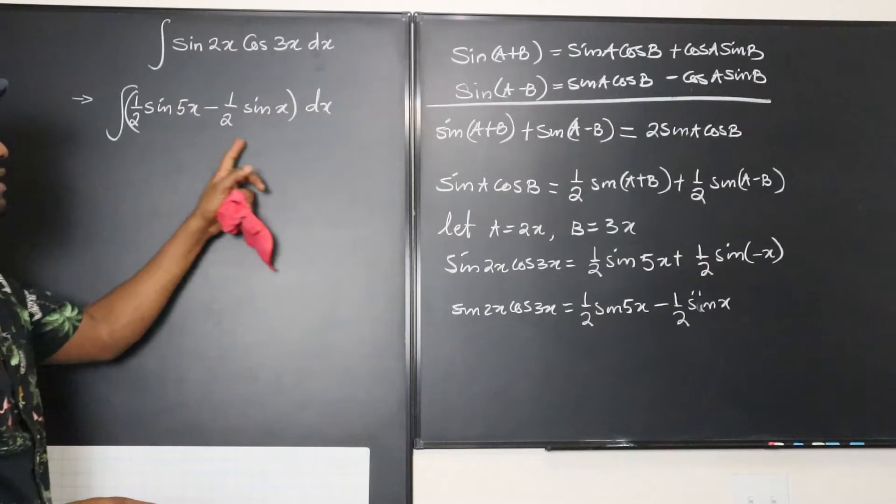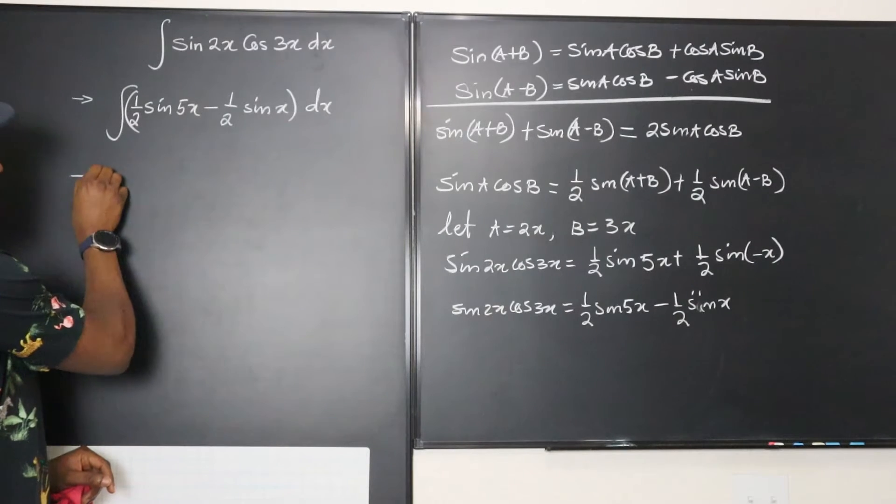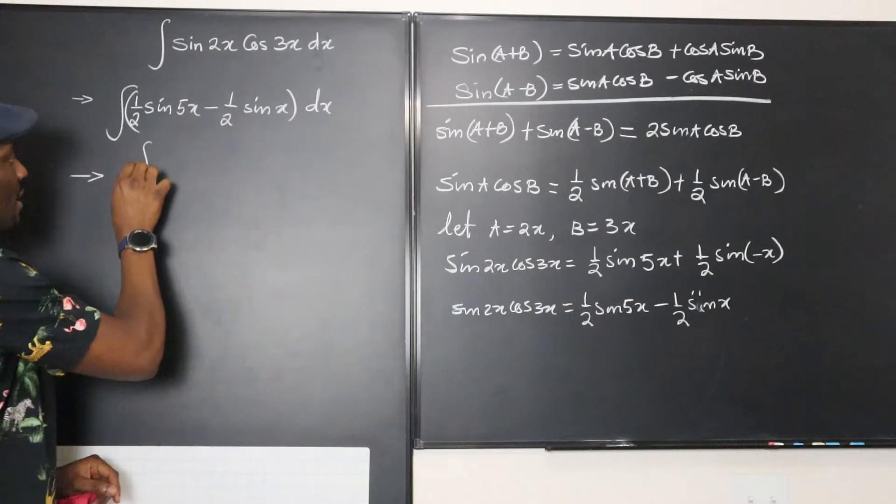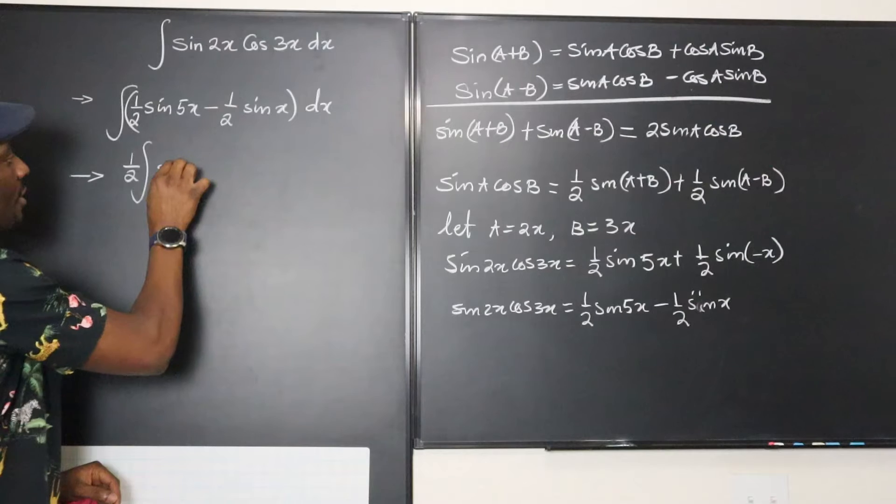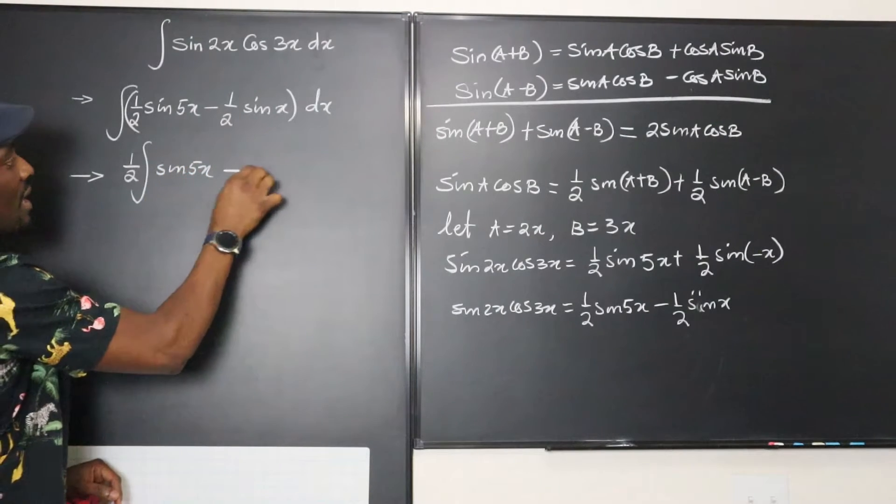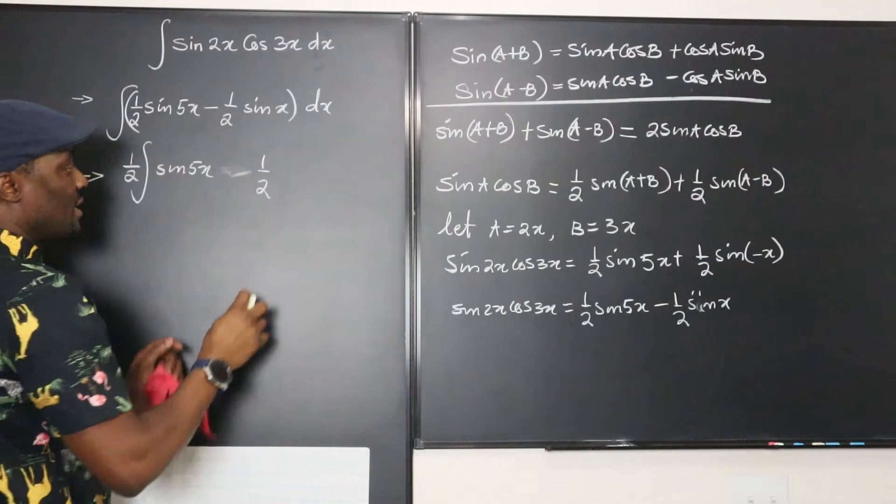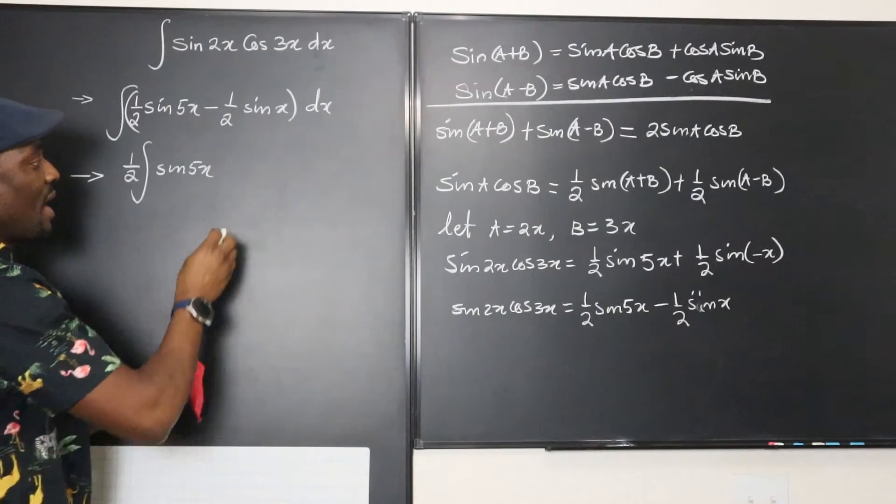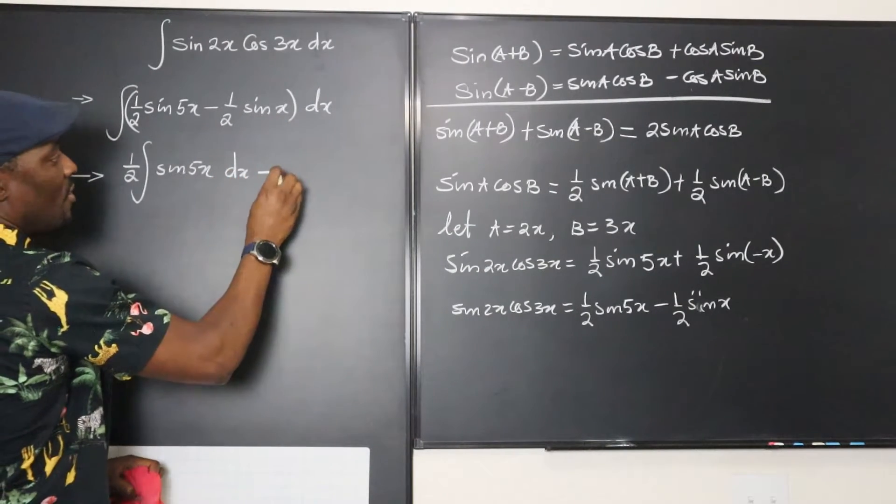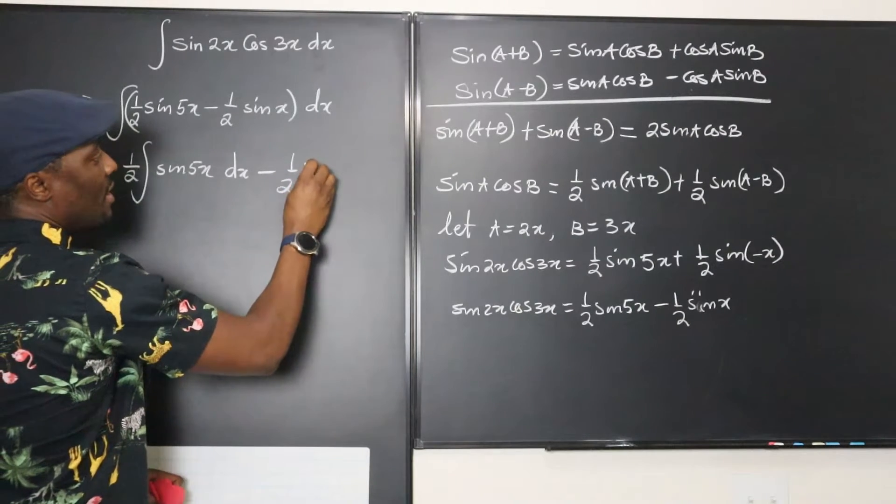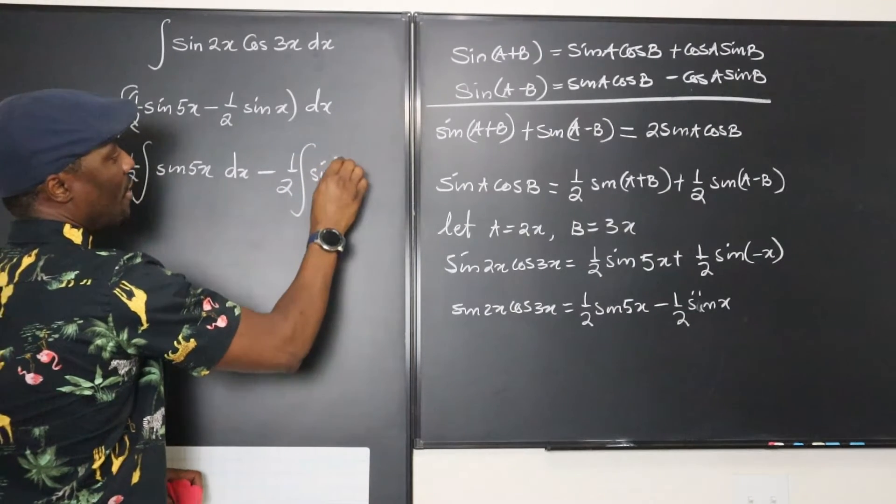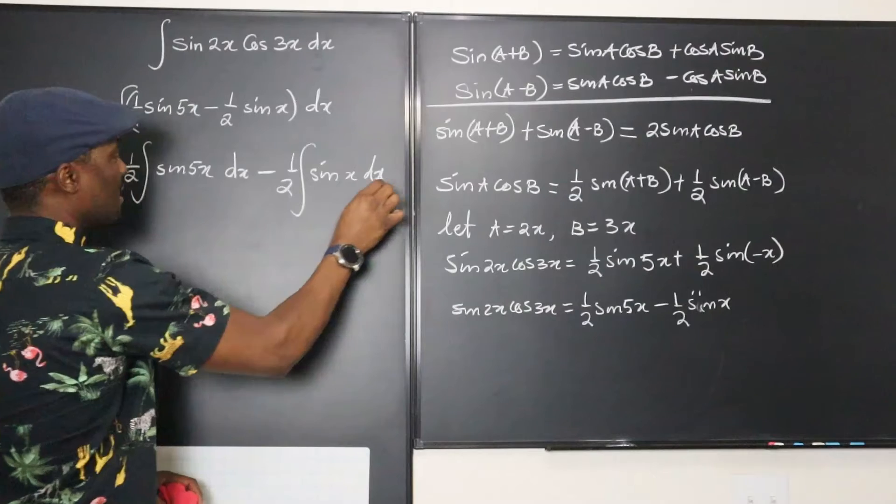Now we can split this into two different integrals, which will be one half of the integral of sine 5x minus one half, never forget dx otherwise it becomes meaningless, minus one half the integral of sine x dx.